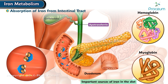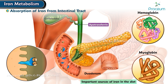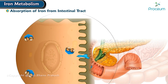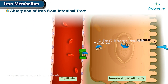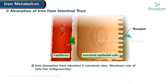This combination is called transferrin. Transferrin is attracted to and binds with receptors in the membranes of the intestinal epithelial cells. Then by pinocytosis, the transferrin molecule carrying its iron store is absorbed into the epithelial cells and later released into the blood capillaries beneath these cells in the form of plasma transferrin. Iron absorption from the intestines is extremely slow, at a maximum rate of only a few milligrams per day.